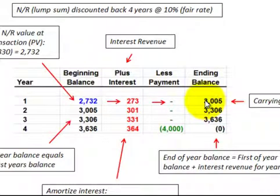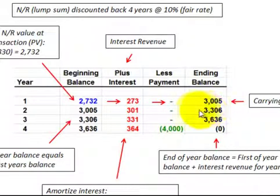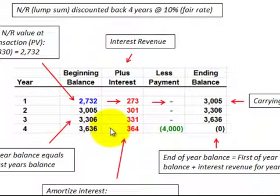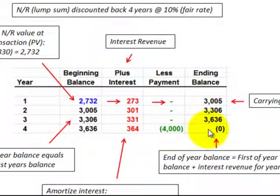The ending balance of year one becomes the beginning balance of year two. We repeat the calculation: 10% times $3,005 equals $301, and we add interest onto the beginning balance to get a new ending balance. We repeat this for years three and four. In year four, we had a beginning balance of $3,636 times 10% interest, giving $364 of interest for the year. Adding $364 to $3,636 gives $4,000 — and that's the year we get paid at the end. So we had a $4,000 balance minus the $4,000 payment received, leaving an ending balance of $0.